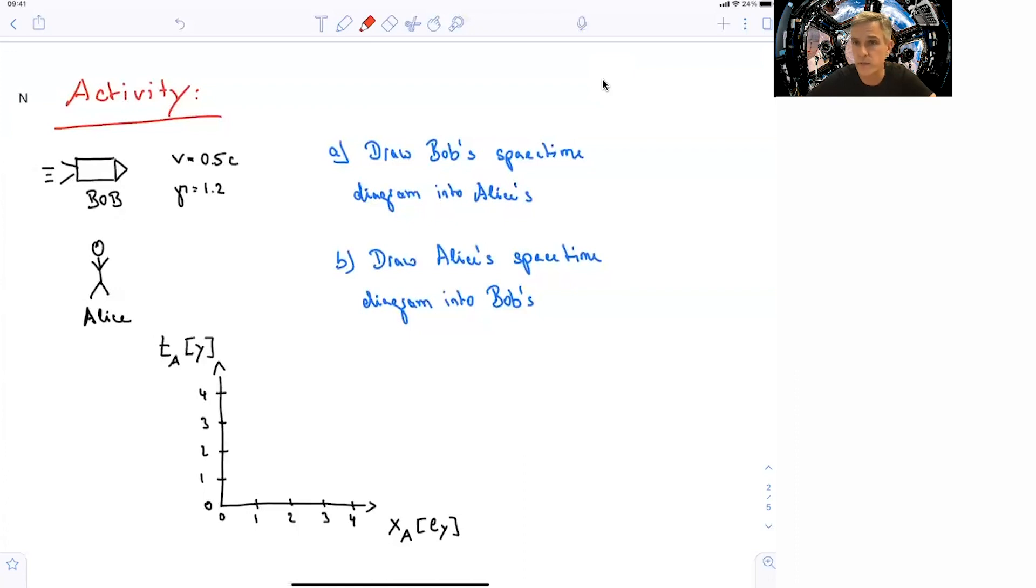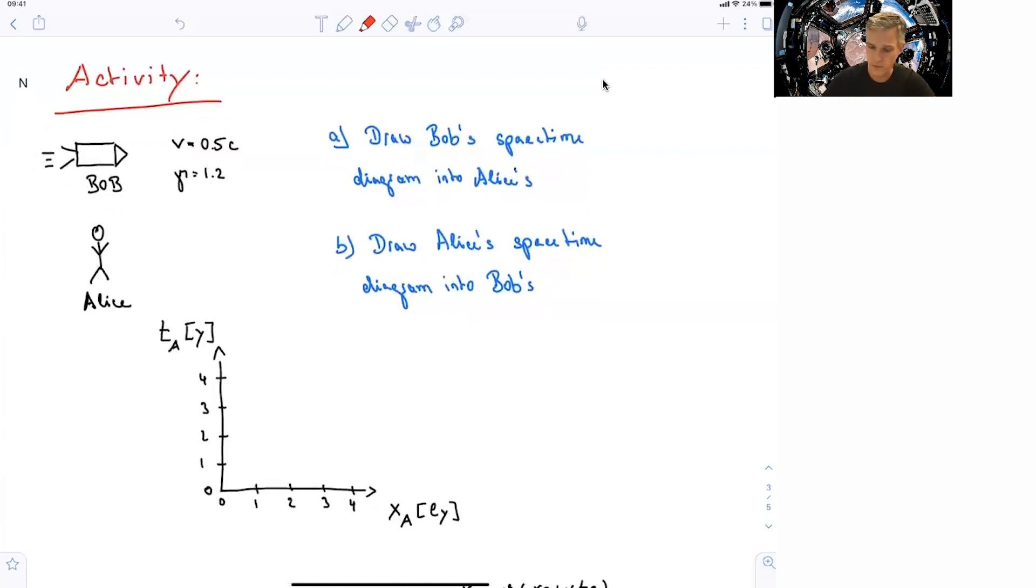The situation is very similar to previous ones discussed in this lecture. Alice is stationary and Bob moving in this rocket with a velocity of half the speed of light, or a gamma factor of 1.2. All right, try. Go ahead. Try to show where is the time axis for Bob, and where is the spatial coordinate for Bob.